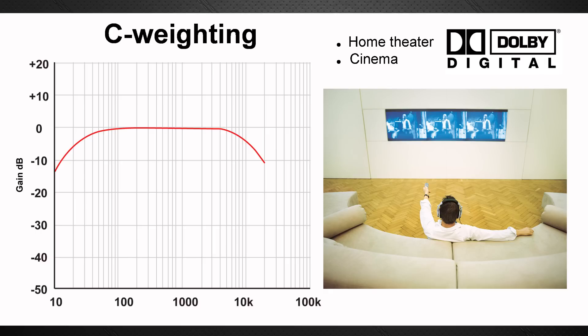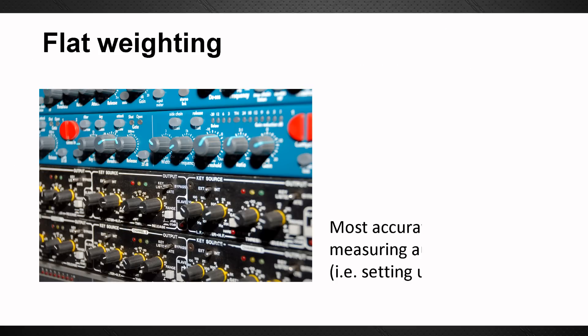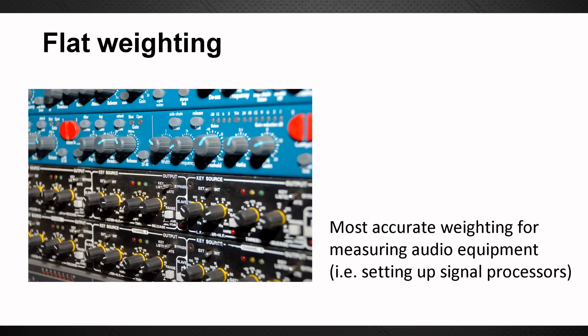Most movie theaters and cinemas do employ this base level. Flat weighting on the other hand can be used for measurement of audio systems where no actual hearing is necessary. It's commonly used when setting up signal processors like EQs, effects and such. Running pink noise or a sine wave through a signal processor, mixer or other device and using flat weighting will give you more accurate results.